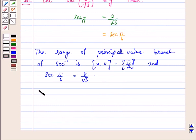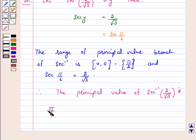Hence, the principal value of secant inverse 2 by root 3 is pi by 6. So this is the answer for the above question. I hope the question is clear to you. Bye and enjoy yourself.